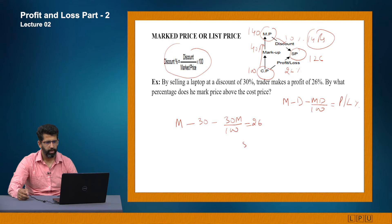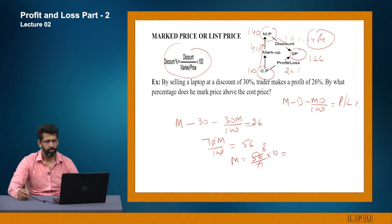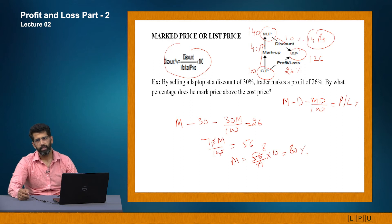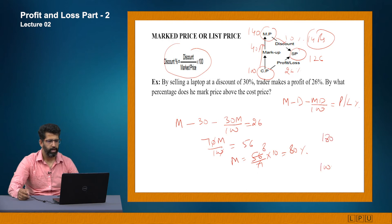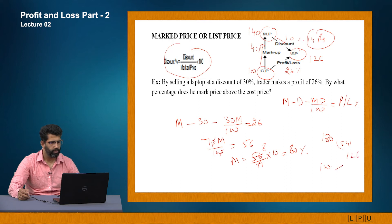Let's verify practically: cost price = 100, mark price = 180. A 30% discount on 180 = 54. So selling price = 180 - 54 = 126. That gives a profit of 26%, which matches the question. I hope that is clear.